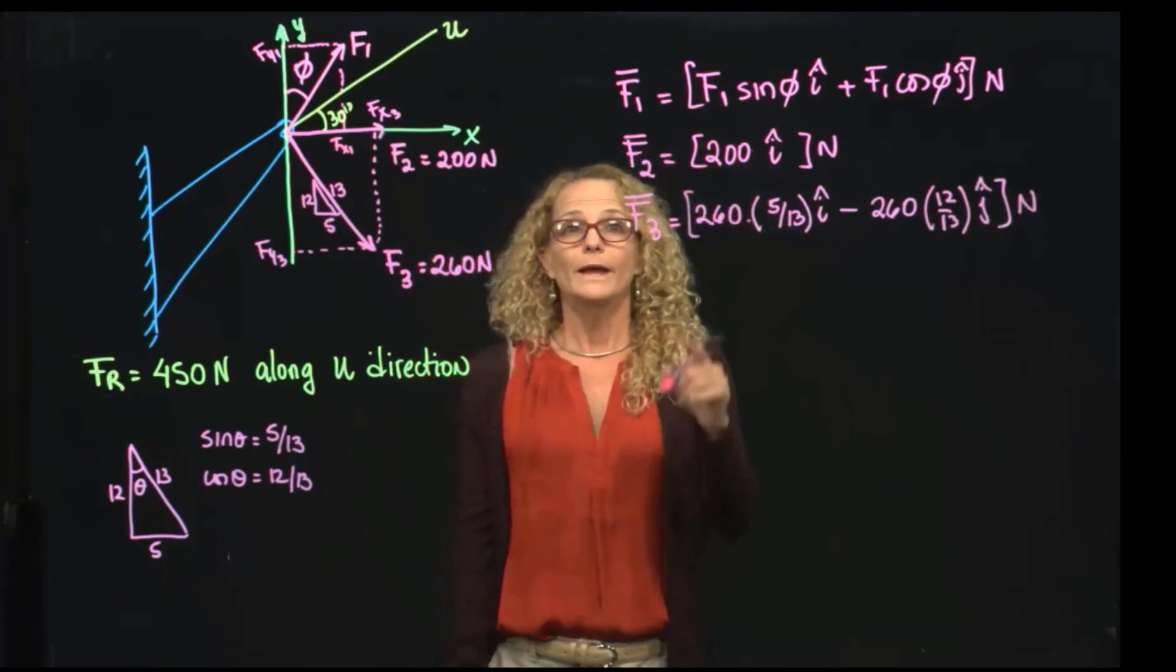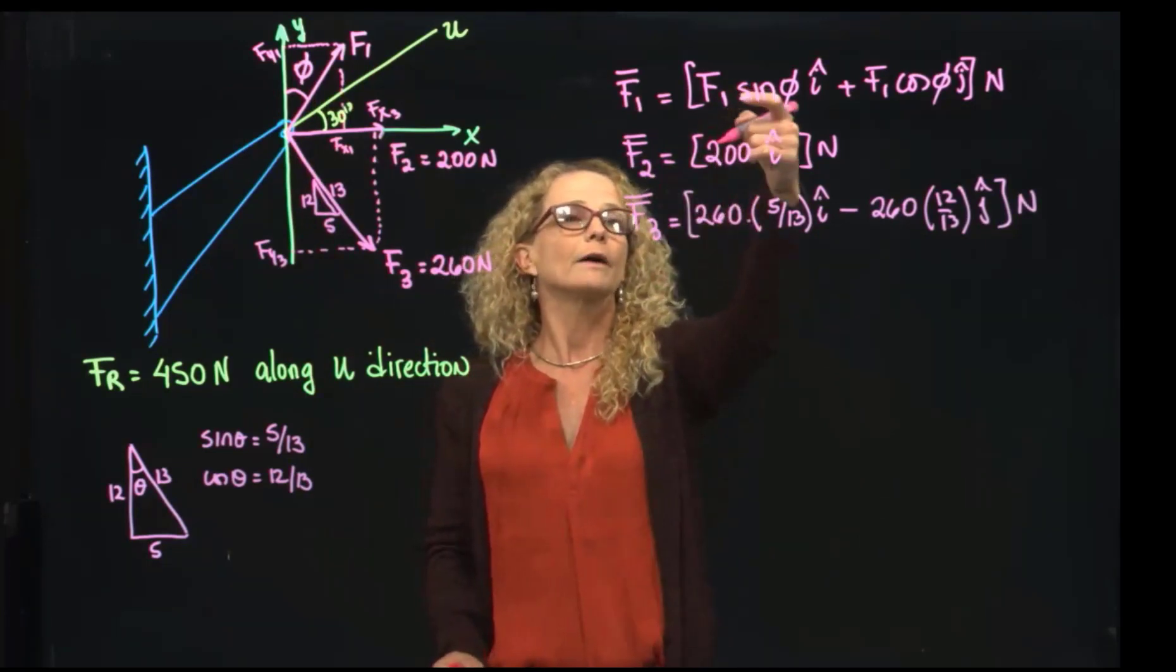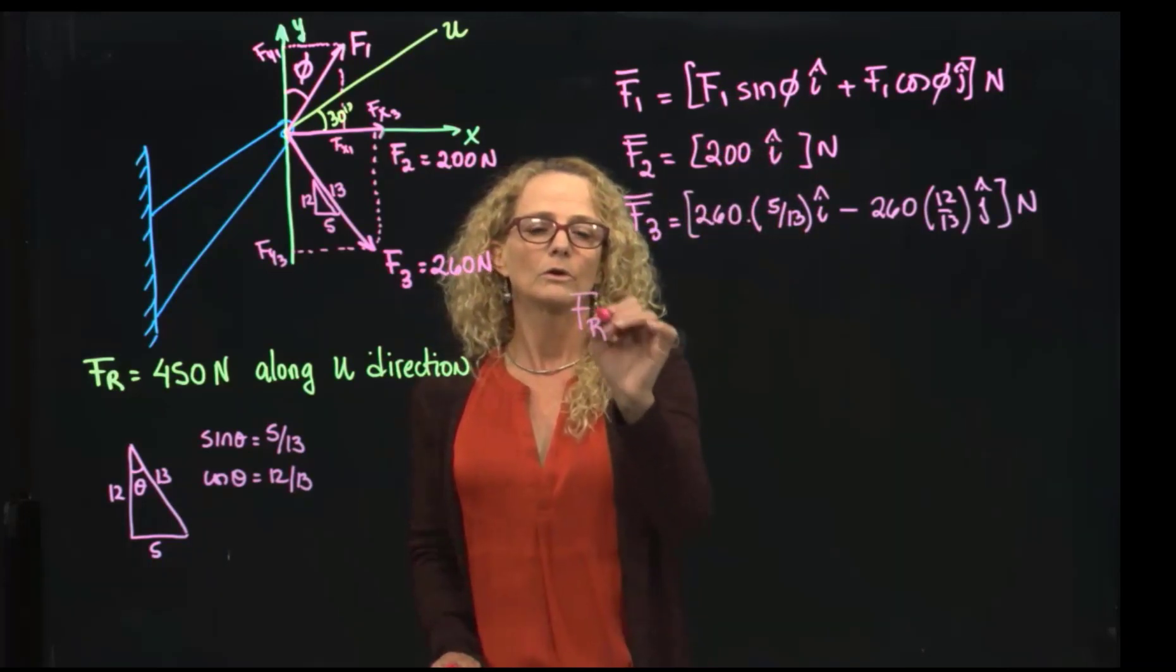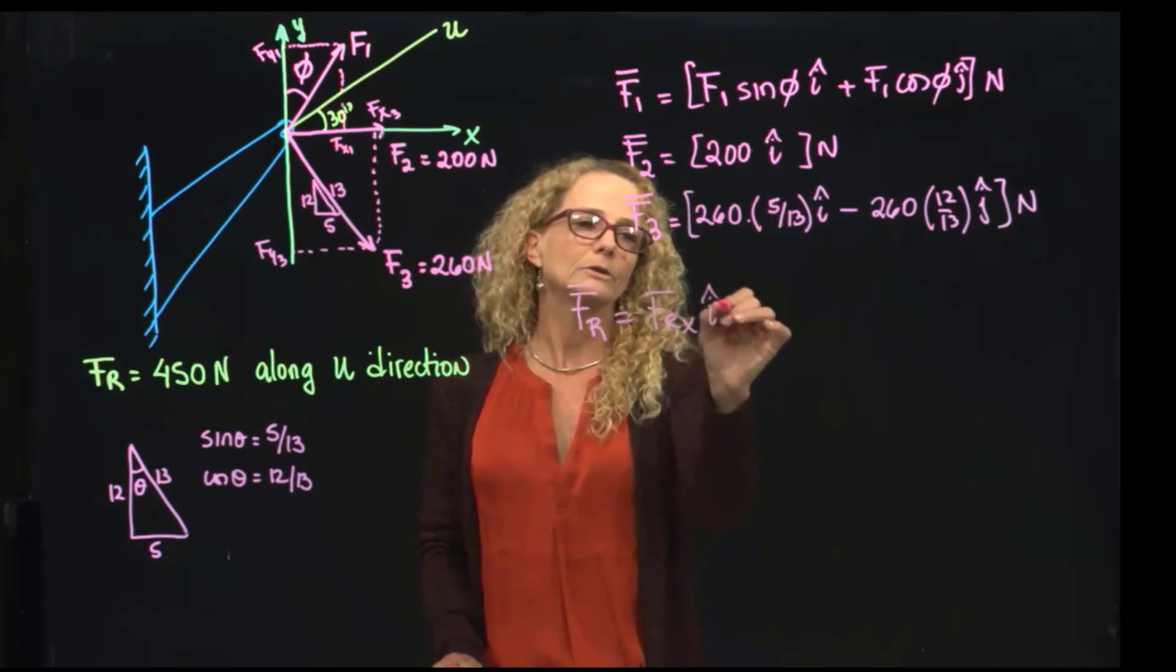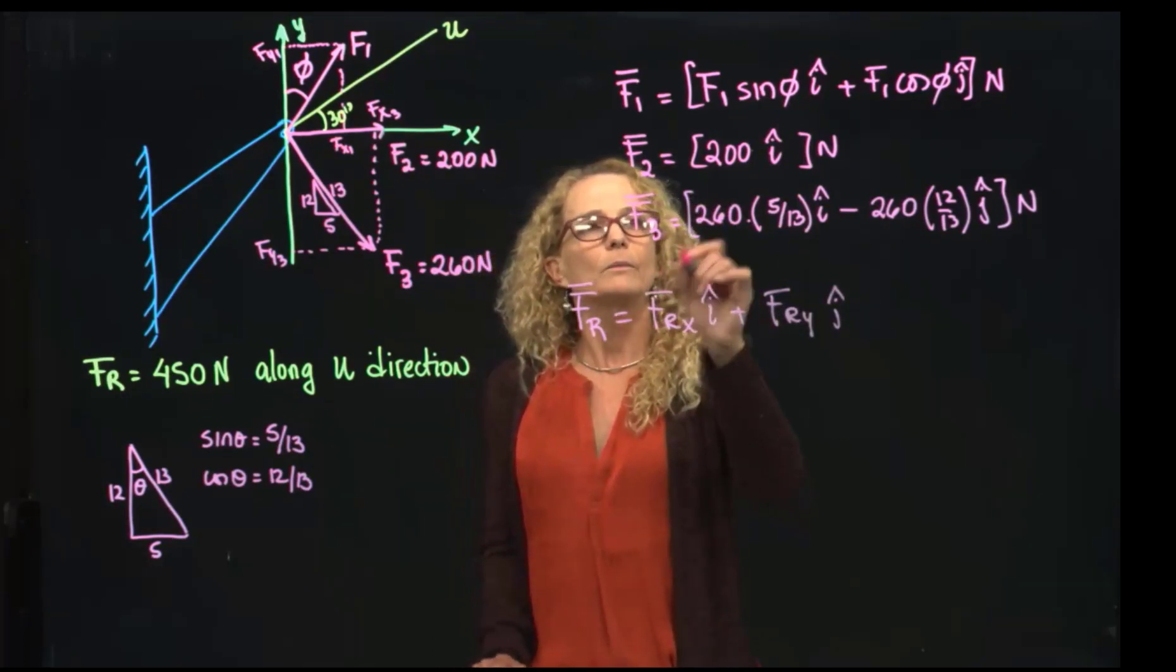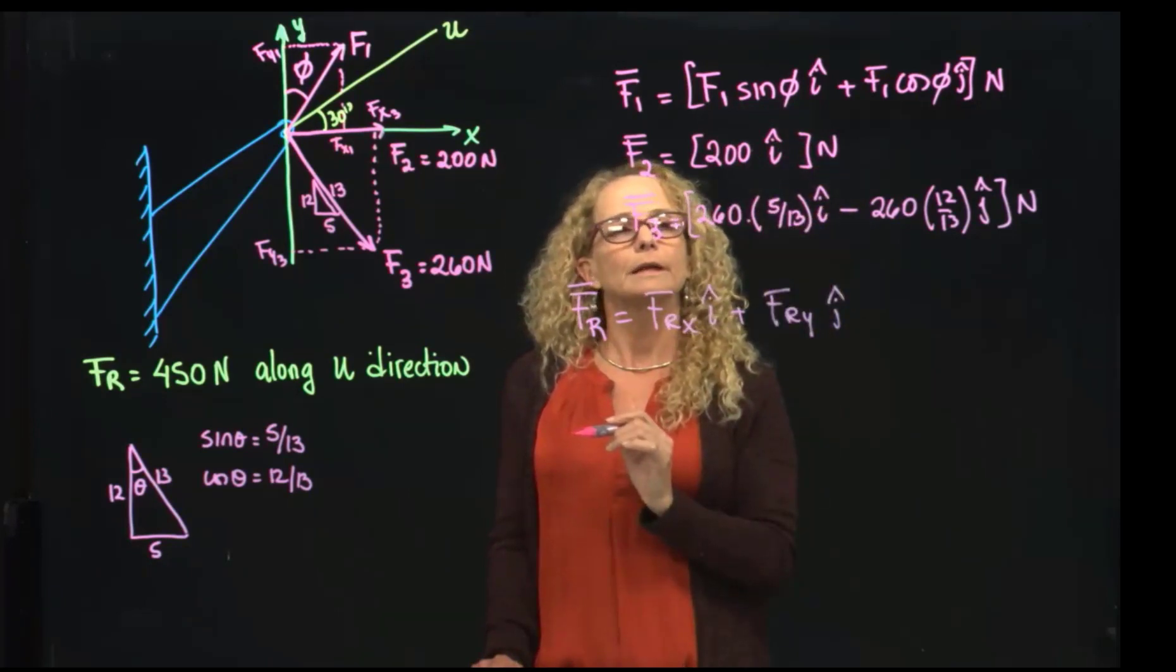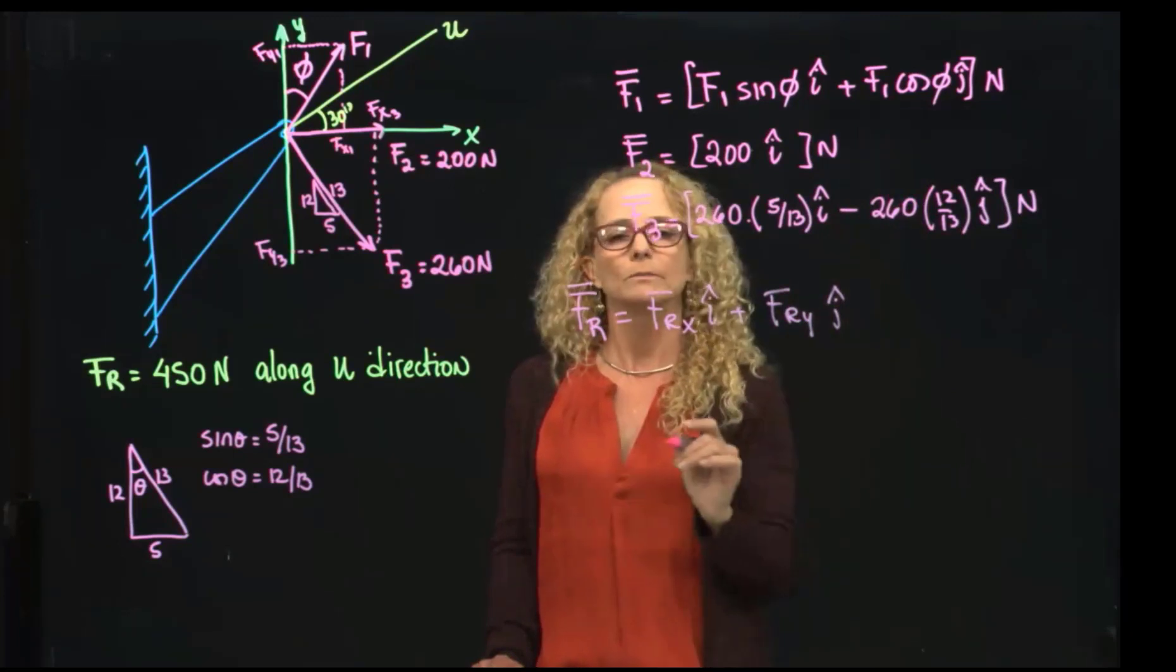So we have all the components of our vectors. To find the resultant, we have to add all these vectors in the I-direction and in the J-direction. This one will be found by adding all the components in the I-direction, and this one will be adding all the components in the Y-direction.